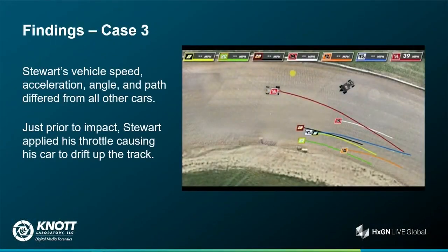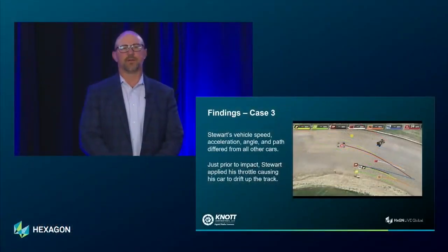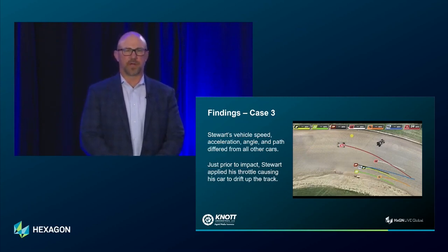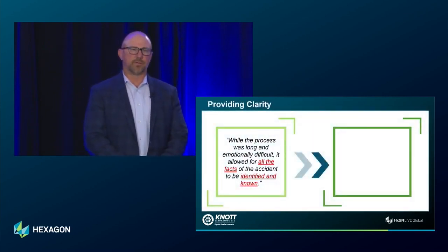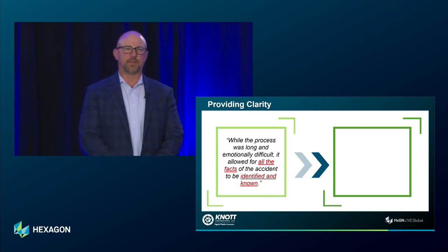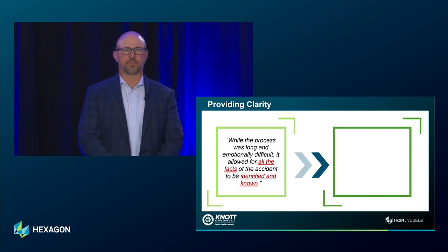The findings of the case were ultimately that Stewart's vehicle's speed, acceleration, angle, and path differed from all of the others. Prior to impact, Stewart applied his throttle, causing his car to drift up the track. There are many other findings, but these were the key ones to present today. Circling back to the original DA's opinion — he stated that while the process was long and emotionally difficult, it allowed for all of the facts to be identified and known.